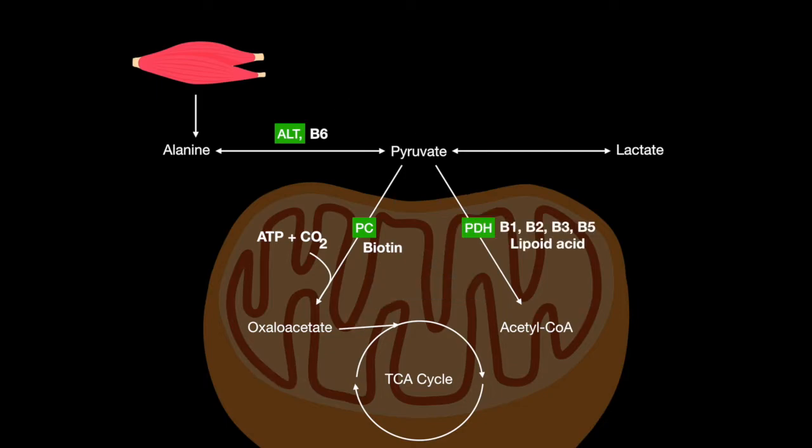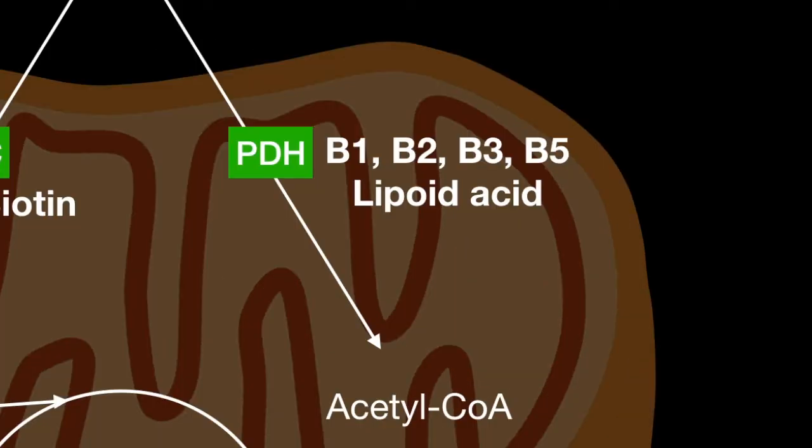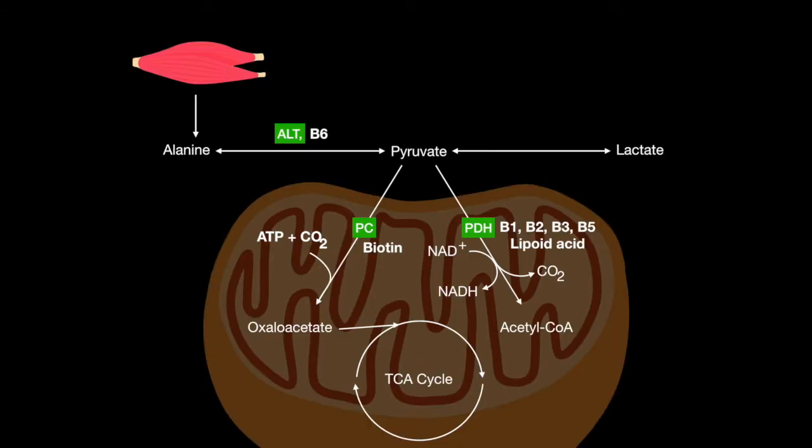Pyruvate dehydrogenase dependent upon B1, 2, 3, 5, and lipoic acid can turn into acetyl-CoA for entrance into the TCA cycle. And lastly, B3-dependent lactic acid dehydrogenase can be used to replenish NAD+, to keep glycolysis running in case of anaerobic conditions.